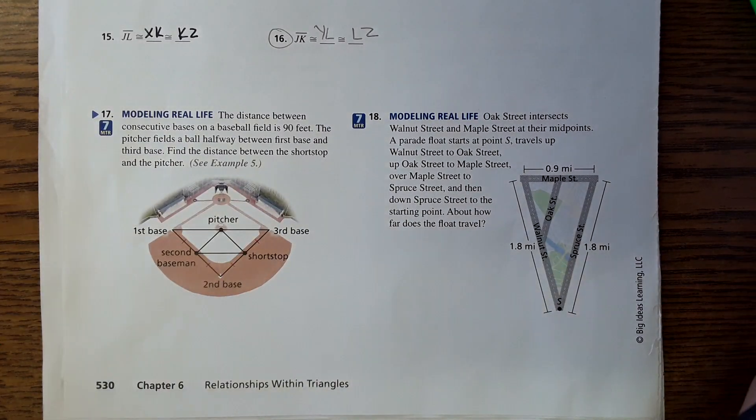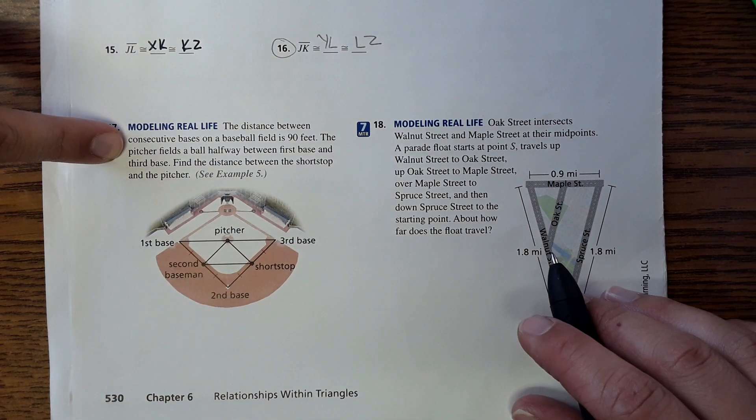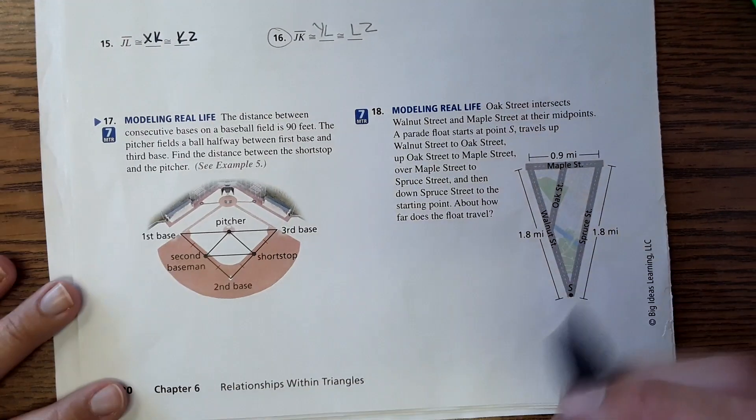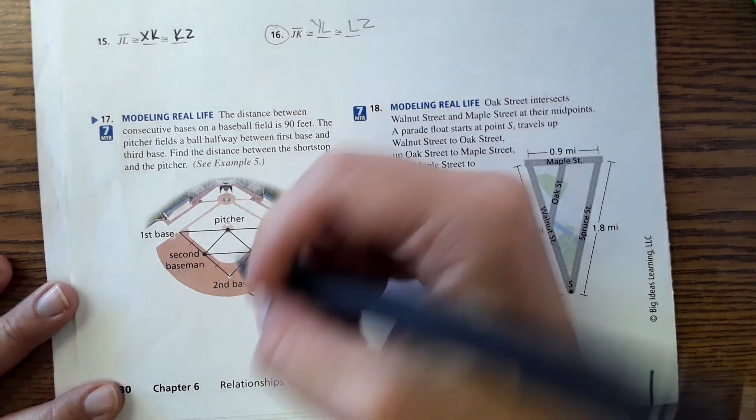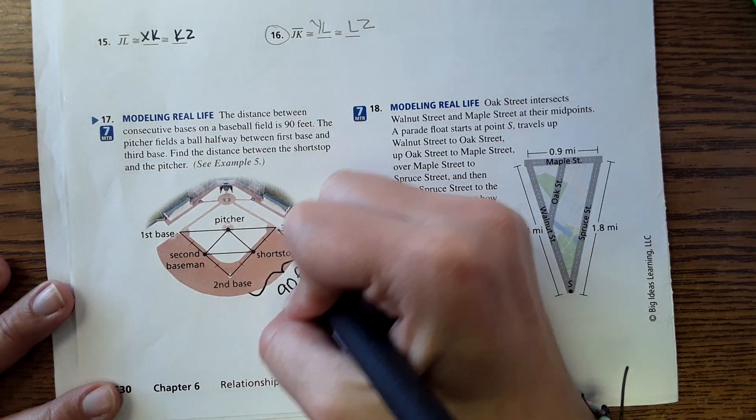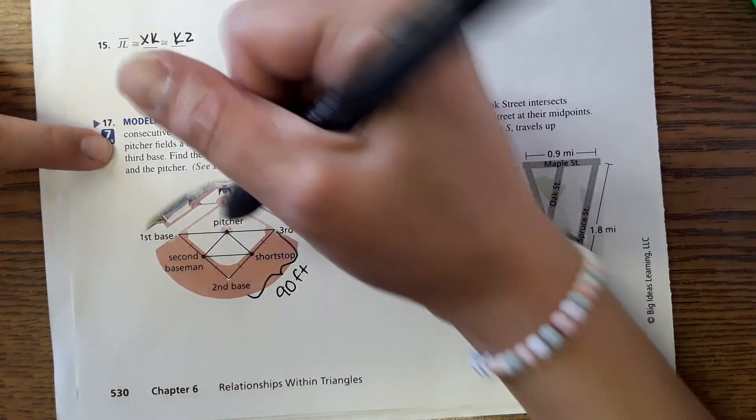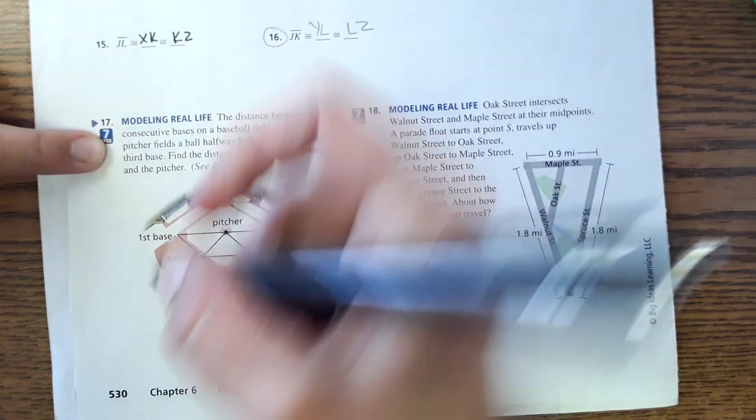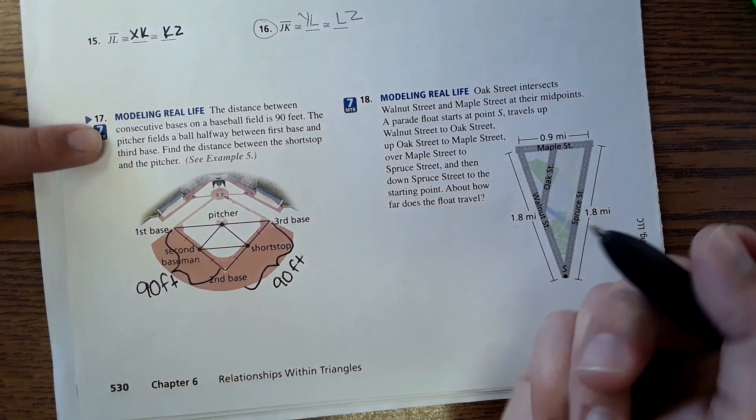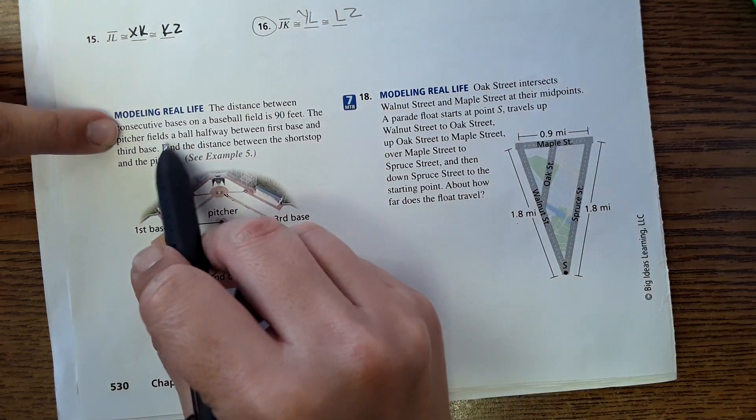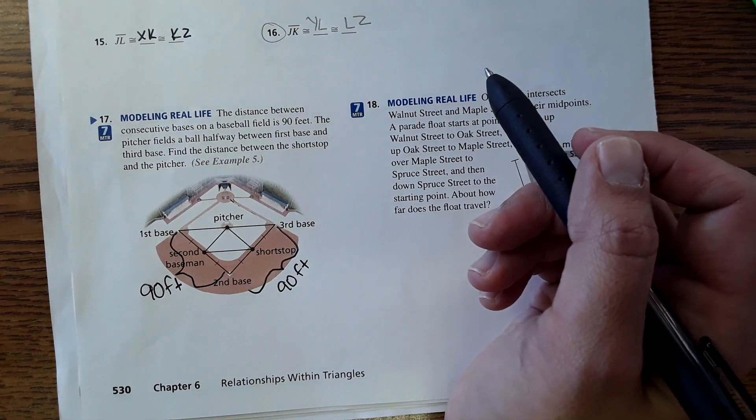It says number 17 modeling real life: the distance between consecutive bases on a baseball field is 90 feet. Okay, so distance here is 90 feet, and then all these distances are 90 feet - this would be 90, this would be 90, this would be 90 over here, 90 feet and so on. The pitcher fields a ball halfway between first base and third base, so right here at second base.